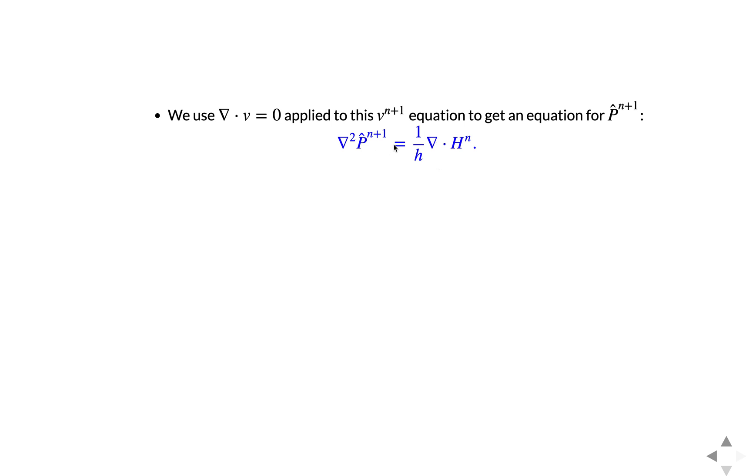And this is an elliptic equation, a Poisson equation. And when we discretize this, this will give us a linear algebraic ax equals b system, where x is the pressure field that we're solving for.